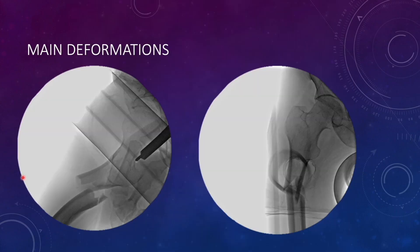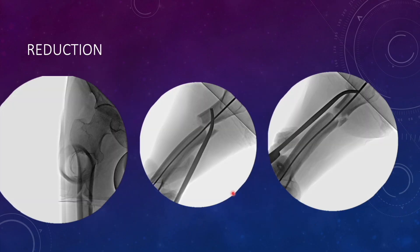The usual displacements in these fractures are flexion in the sagittal plane and varus in the coronal plane. As far as reduction is concerned, reduction can be done by usual techniques. For varus, you can push the proximal part of the femur medially to realign it into valgus. For flexion, you can use a percutaneous stab incision and push an artery forceps or Kocher forceps along the surface of the femur to bring it anteriorly and toggle it posteriorly to counter the flexion. Alternatively, you can use a Hohmann lever to perform the same maneuver.